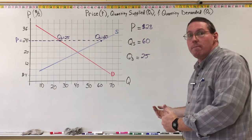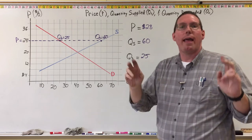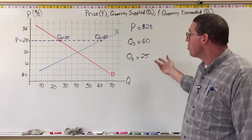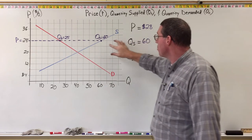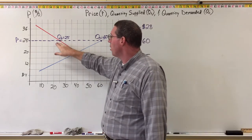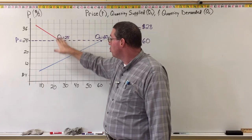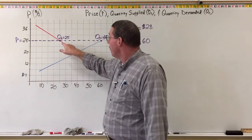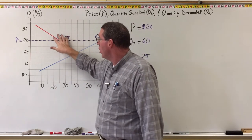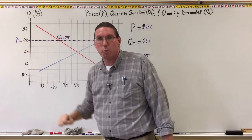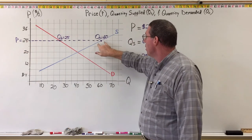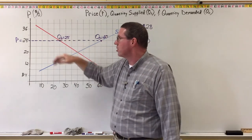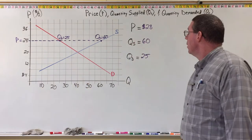This is a situation where buyers and sellers agree on a price of $28, but they do not agree on the quantity. Without agreement on quantity, we're not going to have an efficient market. The sellers want to produce 60, but buyers only want to buy 25. Will 25 be produced and sold? Yes, because 25 units are in agreement, but sellers would like agreement on all 60.